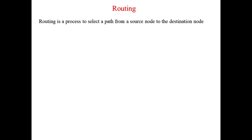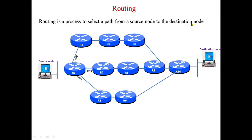Today we are going to discuss routing, routing algorithm, and routing table. Routing in simplest terms is a process to select a path from source to destination node. Here we have a network on the left hand side and a network on the right hand side, and in between these are the routers which are going to connect multiple links with each other.